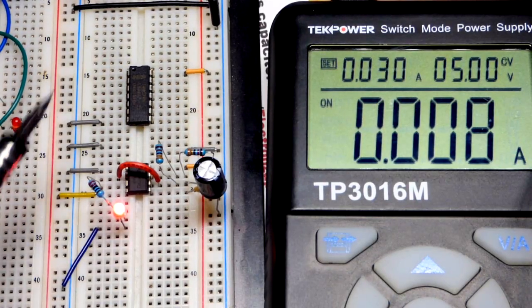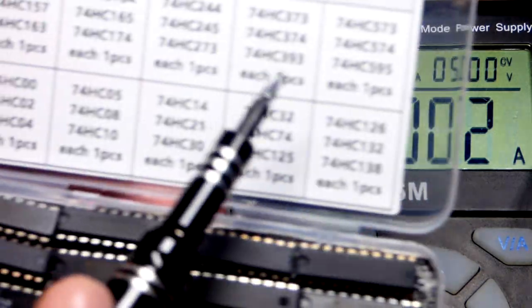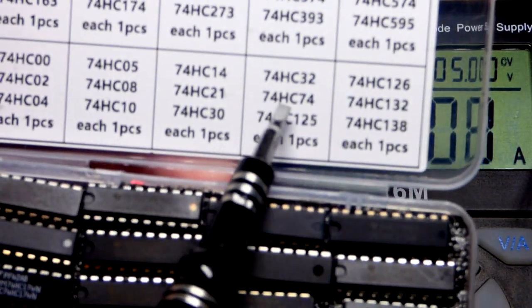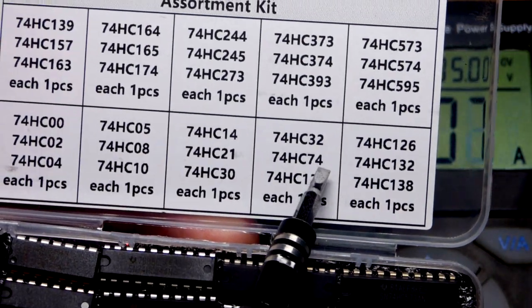So now in this video, we're going to do a quick demonstration circuit of this integrated circuit. This is the 74HC74. The main thing is it's a 7474.